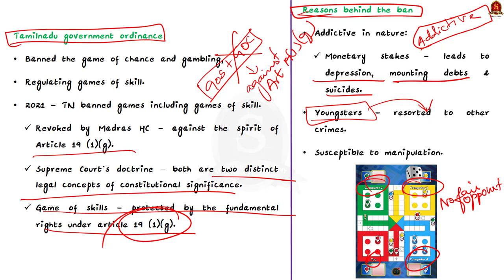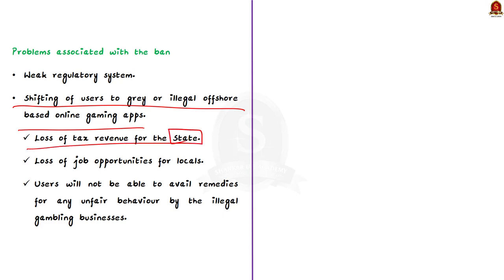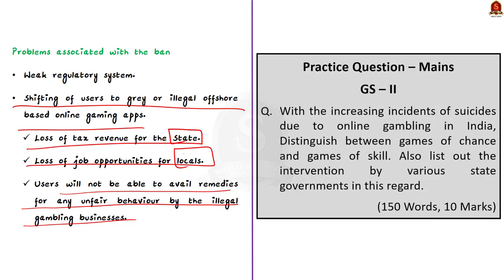The downsides of the ban include that in a country like India, enforcement of a ban without a proper regulatory system is an issue. Banning alone is not enough; the government must strive for stronger regulatory systems. Users may shift to grey or illegal offshore-based online gaming apps, resulting in loss of tax revenue for the state and job opportunities for locals. Users will also be unable to avail remedies for unfair behavior or refusal to withdraw winnings by illegal gambling businesses.